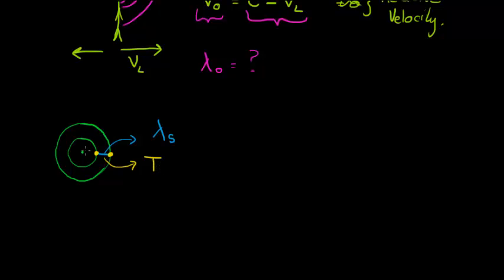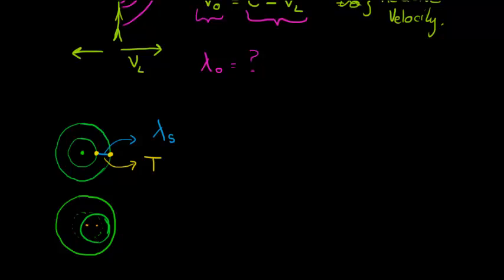What if the source is traveling? It would look different. There's the first wave; the second wave would have been here if the object was not moving. But since it is moving, the second crest is now shifted. If I had my ear right there, the observed wavelength is not the same as the original wavelength of the source — it has lost that little bit at the end due to the fact that my source has traveled.